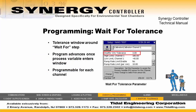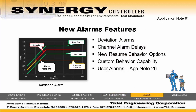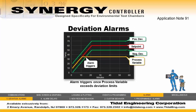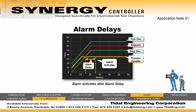Number 1: Wait For Tolerance. The Wait For Tolerance specifies a tolerance window around the Wait For setting. When executing a Wait For Step, the program will not advance until the process variables are within this tolerance. Next, we count down the new alarms features. Number 5: Deviation Alarms. Deviation alarms will trigger when the process variable has deviated from the set point by the user-defined deviation limits. These alarms can be masked on a step-by-step basis for ramp-ups or cooldowns. Number 4: Alarm Delays. To reduce false alarms, delays can be added to any channel, user, or deviation alarm.